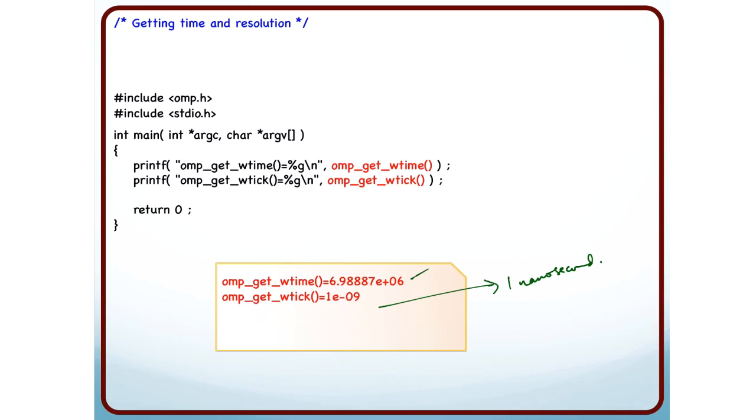So what OMP get W time returns me is the time in seconds, starting from some universal time. Some number of years ago. So you will typically see very large values.